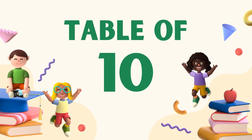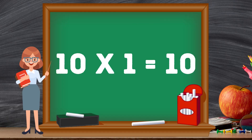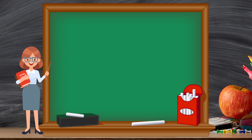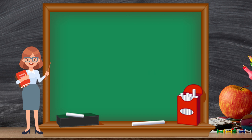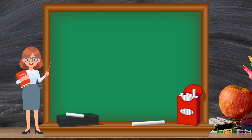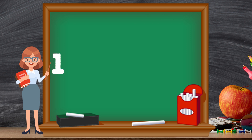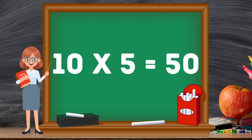Let's revise. Ten ones are ten. Ten twos are twenty. Ten threes are thirty. Ten fours are forty. Ten fives are fifty.